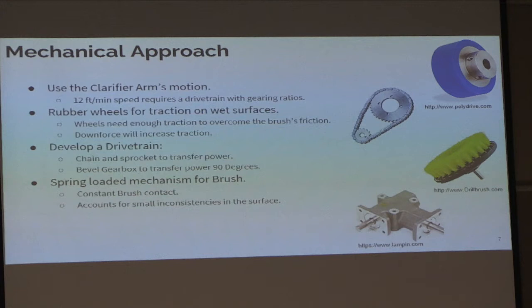To expand on our mechanical approach, the device needs some key features. First, the clarifier arm moves very slowly — around 12 feet per second at the edge of the tank — so we need some sort of gearing ratio to increase that speed for a more effective clean. Second, our rubber wheels need to be grippy enough to get traction on the wet, slippery coated concrete surface, generating enough power for the drive frame to transfer it into a gearbox and rotate the brush 90 degrees to effectively scrub the algae. Lastly, a spring-loaded mechanism maintains constant contact between the brush and the surface, promoting even wear, which was part of the initial goal our clients gave us.